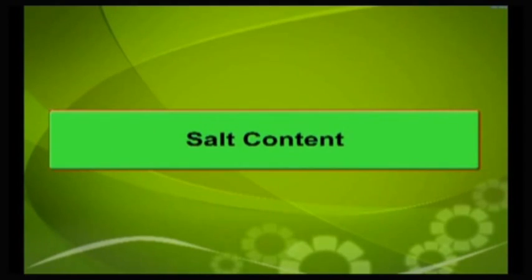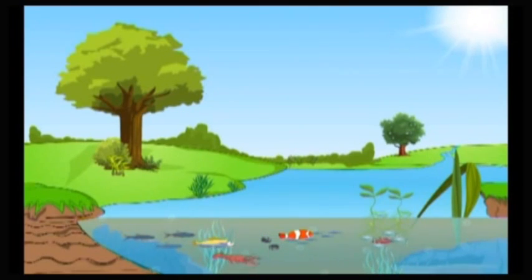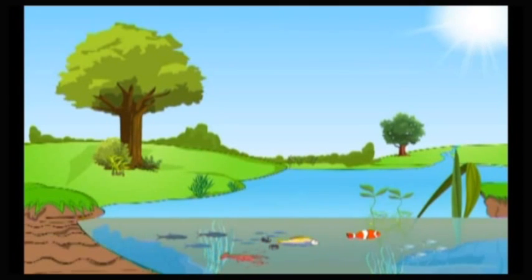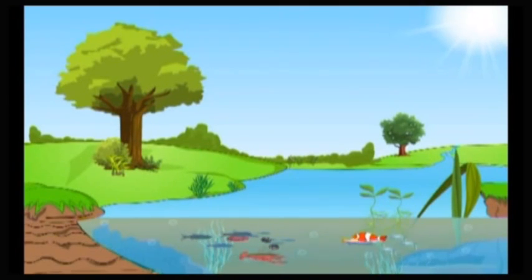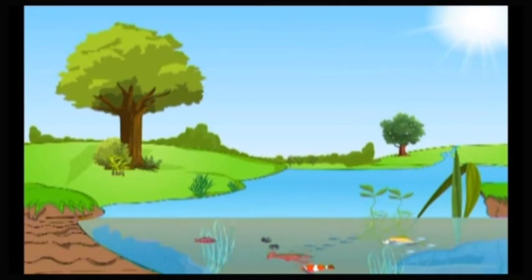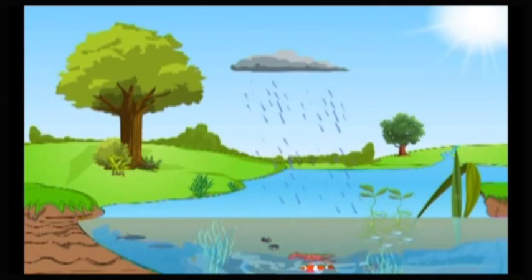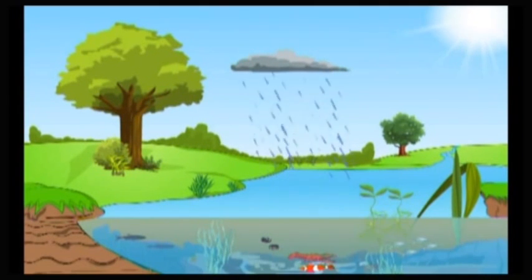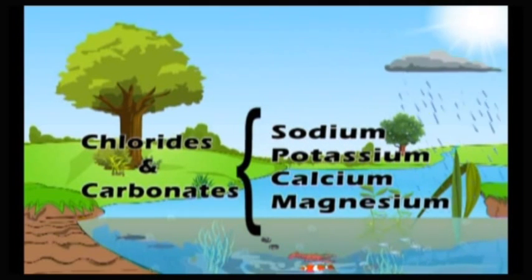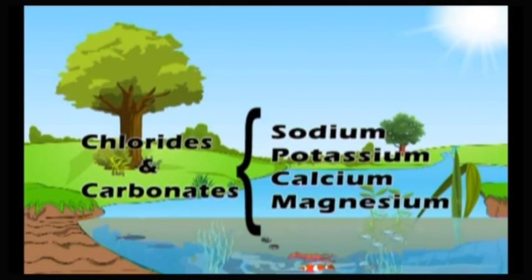Salt content: The salt content in fresh water is very low, about 1.8%. Most of these salts are derived from earth's crust, a small amount from organisms living in these habitats after death and decomposition of their bodies, and from rain. Majority of the salts are chlorides and carbonates of sodium, potassium, calcium and magnesium.